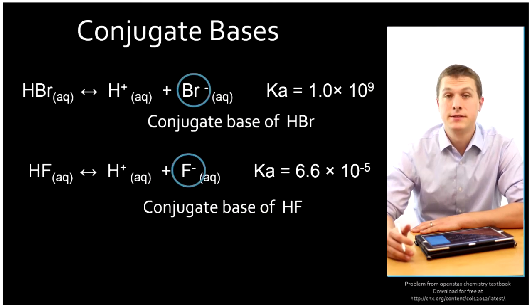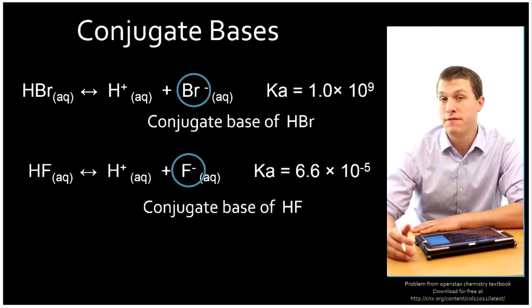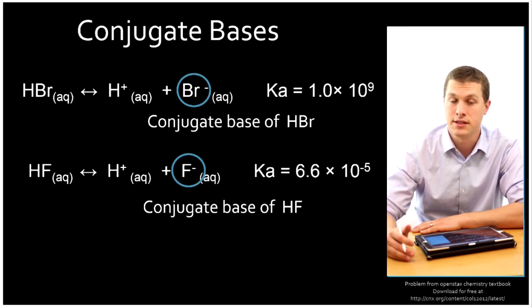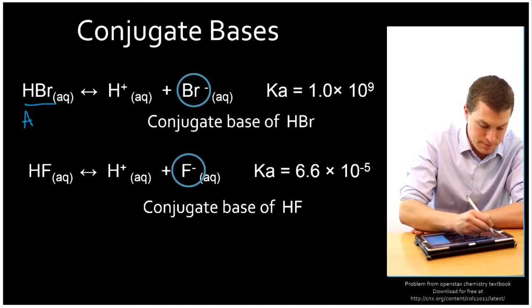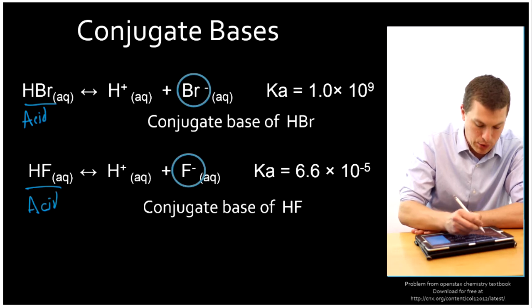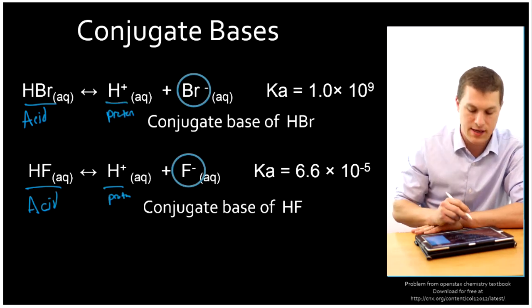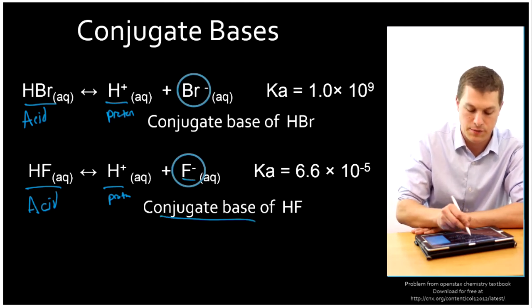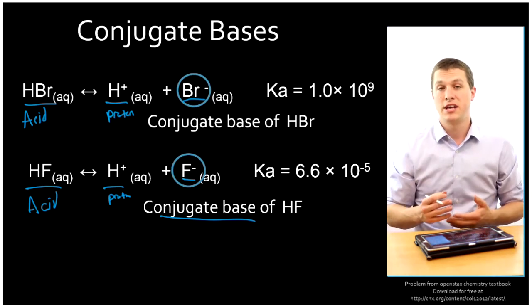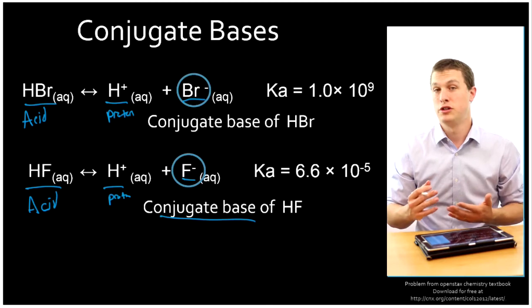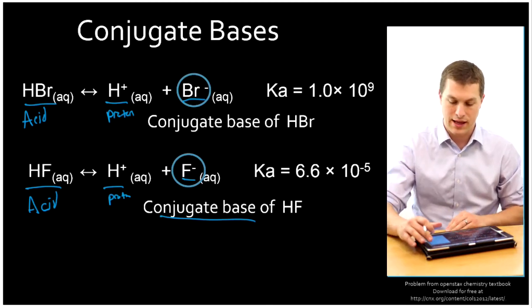What a conjugate base is, is just the base that forms when an acid gives up its proton. Let me say that again. A conjugate base is the base that forms when an acid gives up its proton. So for example, HBR was the acid and HF was the acid and they both give up a proton. What remains then is our conjugate base. So F minus is a conjugate base. Br minus is a conjugate base. That language is important because lots of times if you look at your textbook, it will put all of this acid base stuff in terms of conjugate bases and conjugate acids.